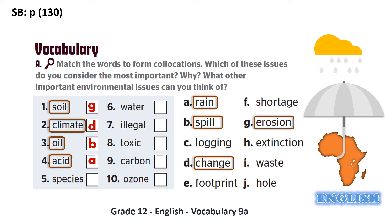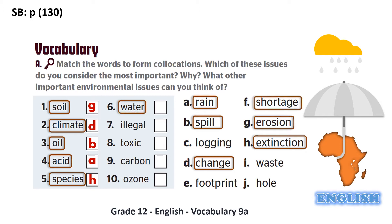The fifth environmental issue is called species extinction, which means that some species become endangered or extinct. So H is the answer for number five. And to describe the lack of access to clean freshwater, we talk about water shortage. So letter F is the answer for number six.